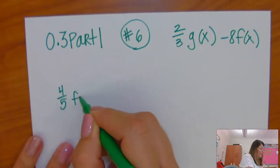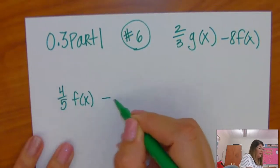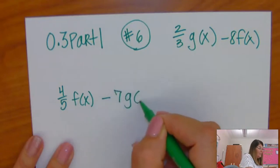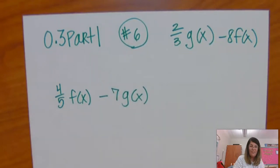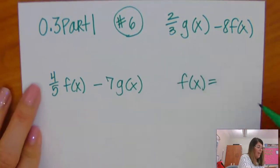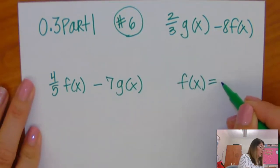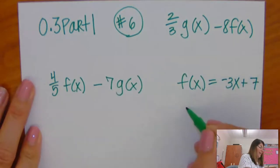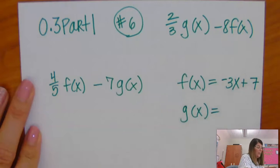So, what if I said 4/5 times f(x) minus 7 times g(x)? And I'll give you the f(x) and g(x). They won't be the ones from your problem. So, f(x), let's make this equal to -3x + 7, and then g(x) will be 4x - 2.